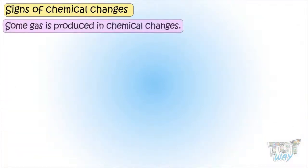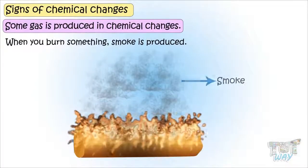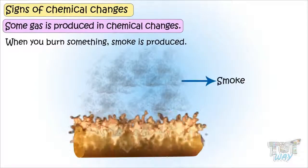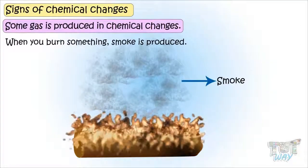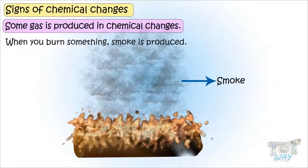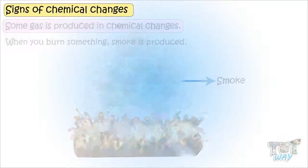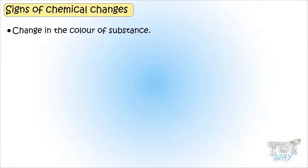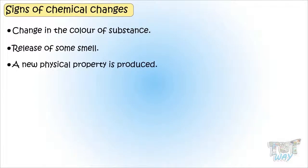Some gas is produced: when you burn something, smoke is produced. So, signs of chemical changes are: change in the color of substance, release of some smell, a new physical property is produced, and some gas is released.